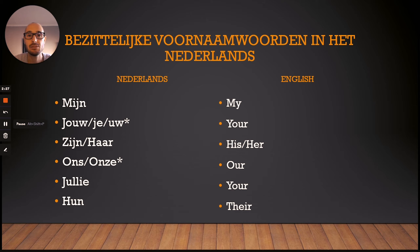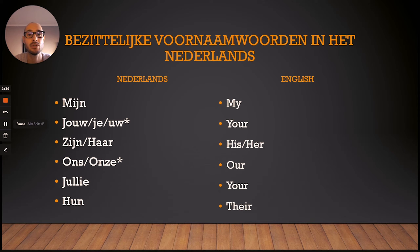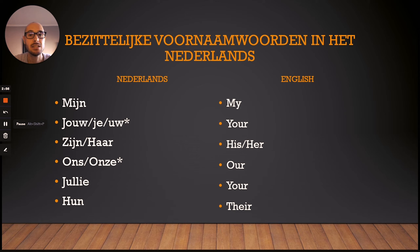Then for 'your' in the plural, it's pretty straightforward — it's exactly the same as the personal pronouns. It's jullie. If you're interested in learning more about the personal pronouns in Dutch, do not forget to check out my video on the personal pronouns in Dutch. And then there will be hun. So I'll just quickly repeat them for you so you can listen to the pronunciation: mijn, jouw, je, u, zijn, haar, ons, onze, jullie en hun.